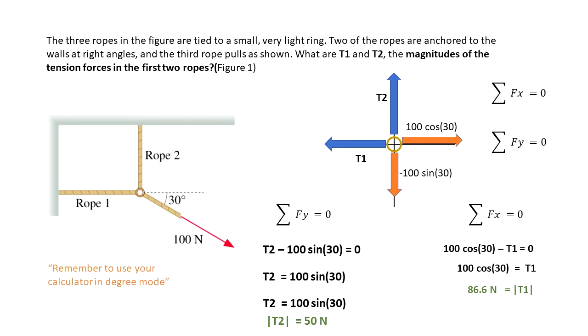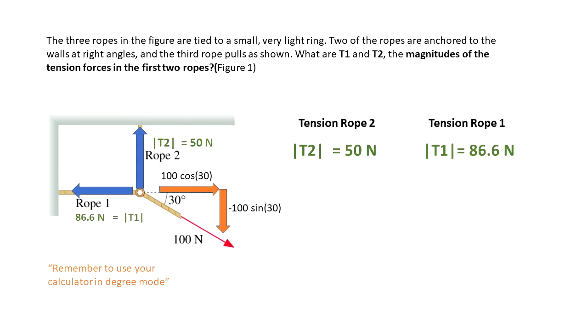So we got that T2 is equal to 50 newtons, and T1 is equal to 86.6 newtons.